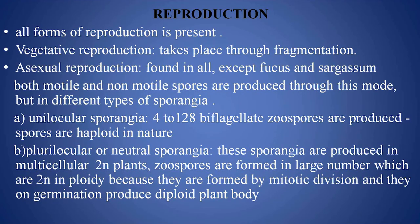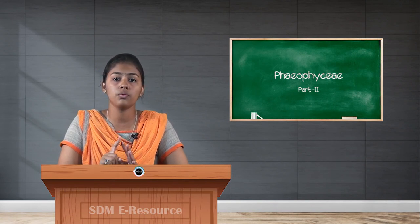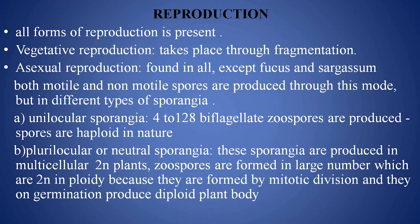Coming to the reproduction of the Phaeophyceae members: all forms of reproduction are present — sexual, asexual, parthenogenesis, and vegetative. Vegetative reproduction takes place through fragmentation. The plant body fragments itself into many pieces due to various reasons, whether environmental or due to plant, human, or animal interventions.